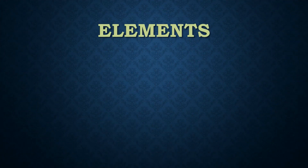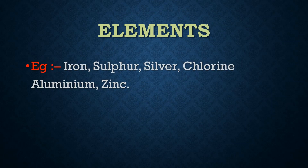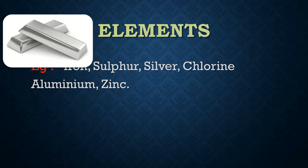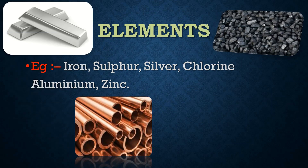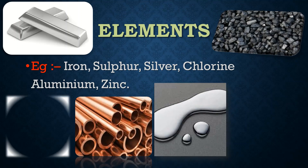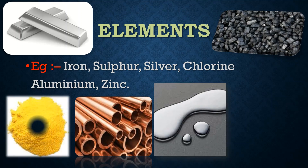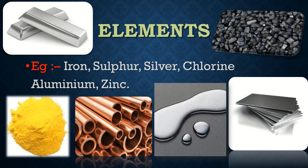Next, we discuss about elements. Pure substances with specific properties which cannot be further divided by either physical or chemical methods, and which are substances with different properties, are called elements. Some examples of elements are iron, sulfur, silver, chlorine, etc.